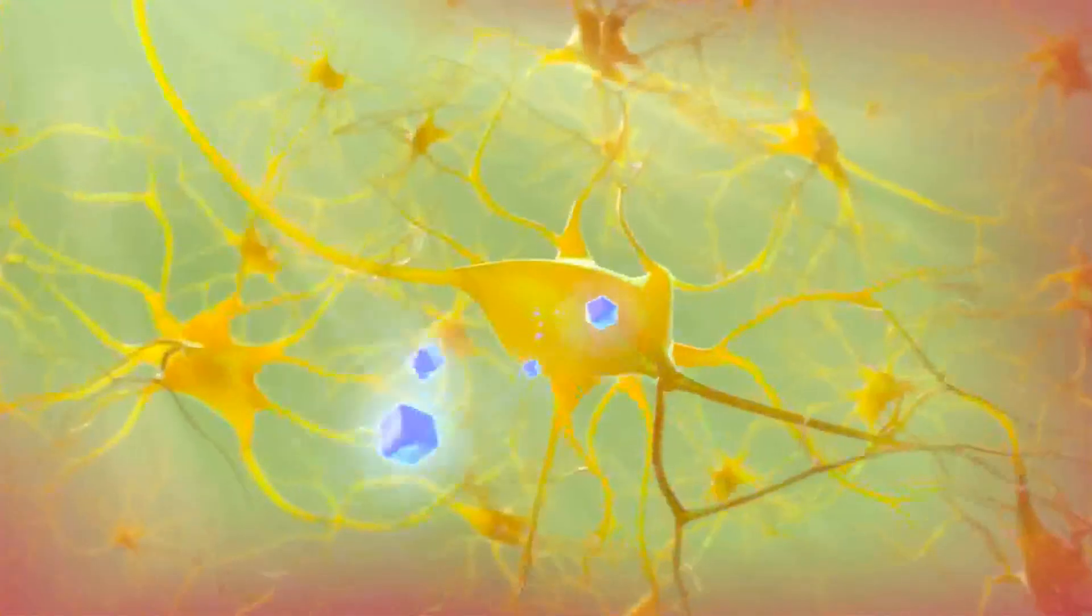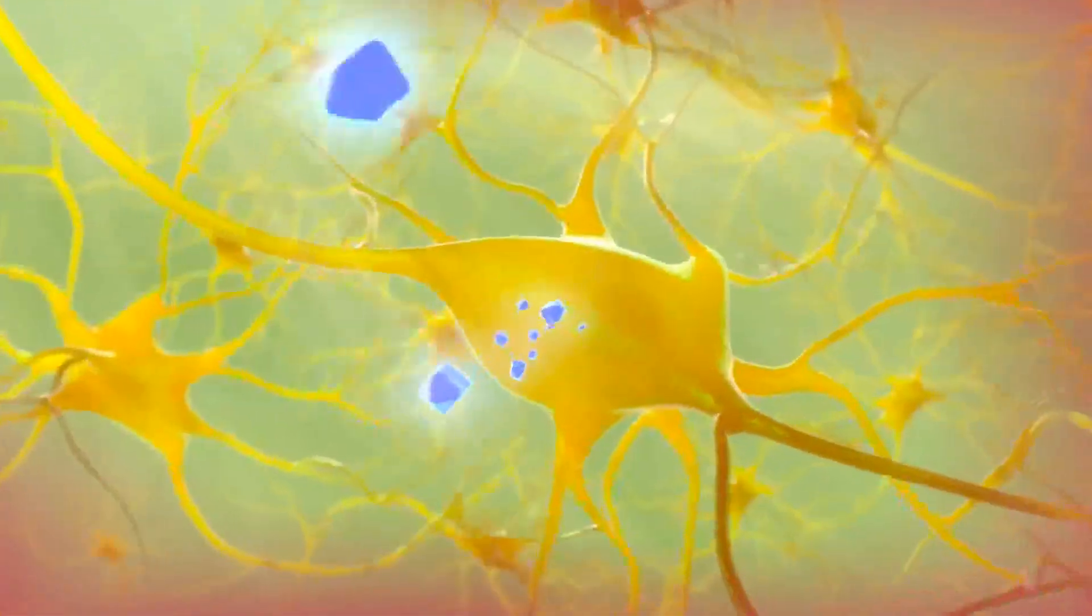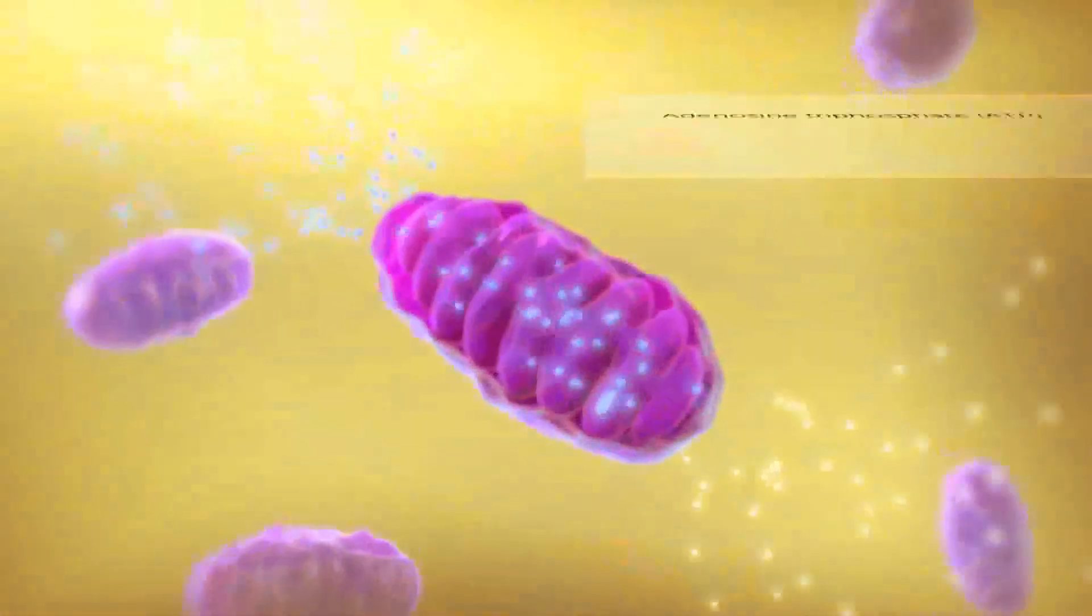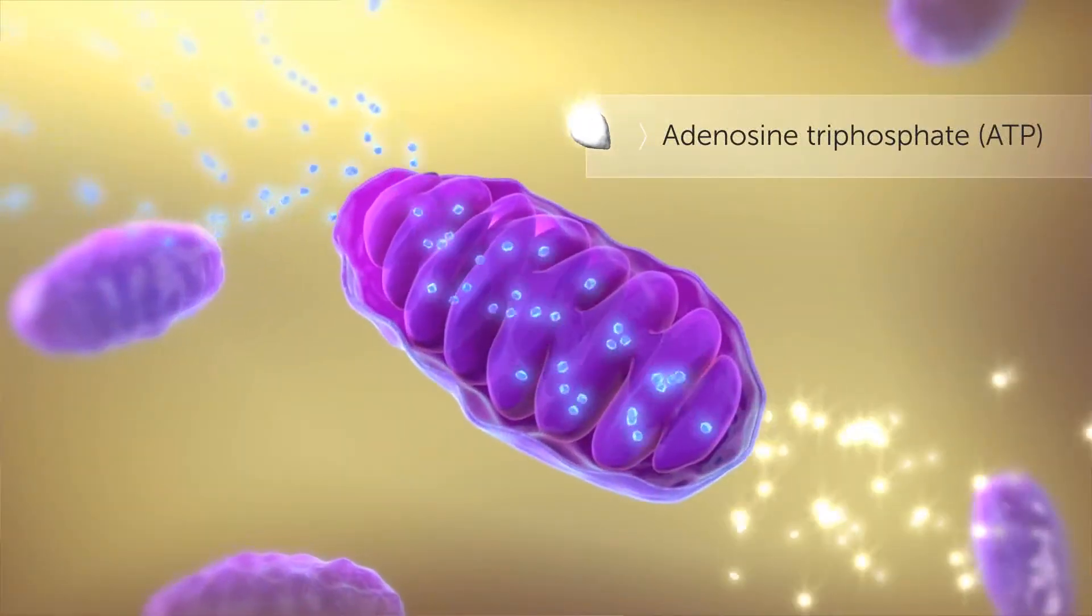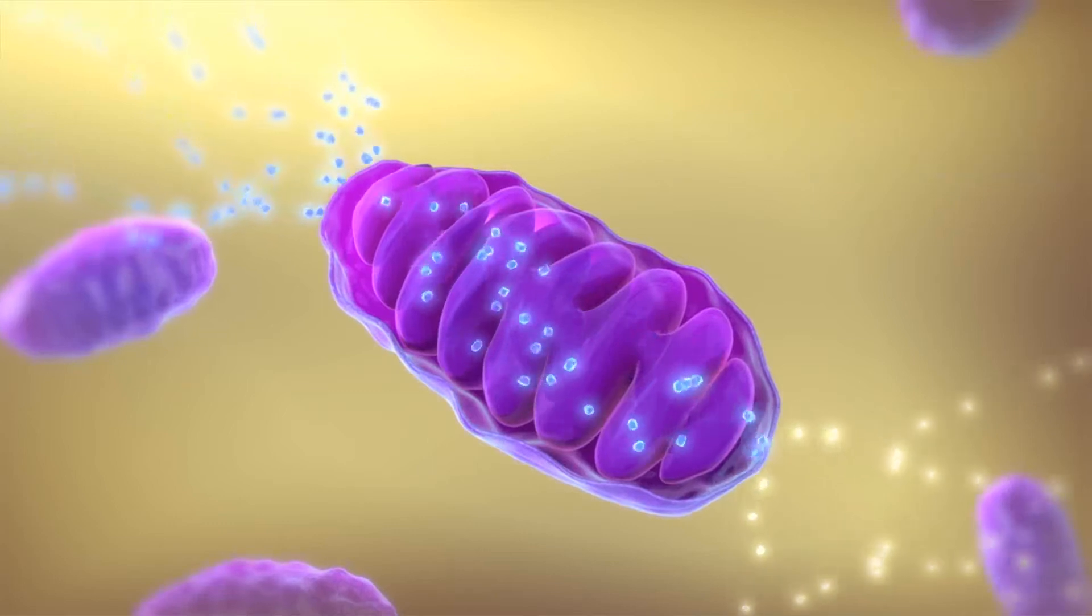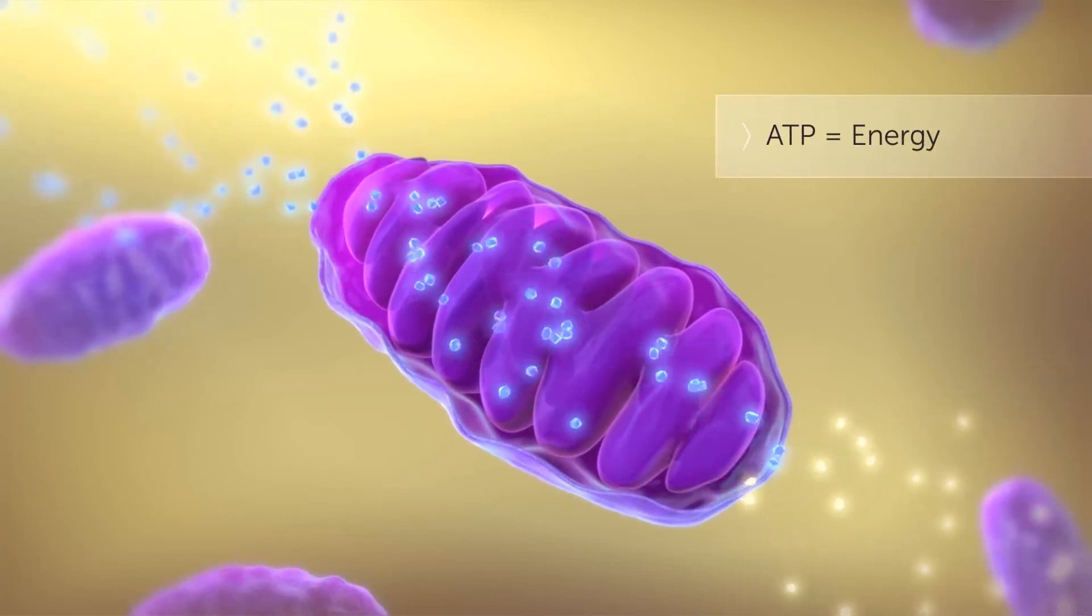Once inside neurons, glucose is metabolized by mitochondria to form adenosine triphosphate, or ATP, the energy needed to power basic cellular functions and synaptic activity.